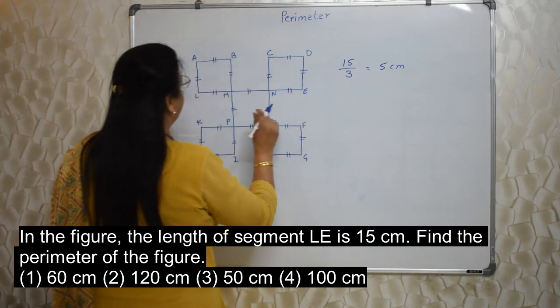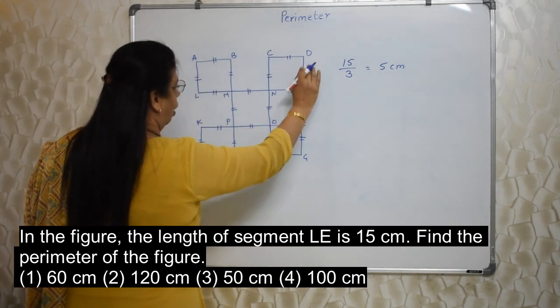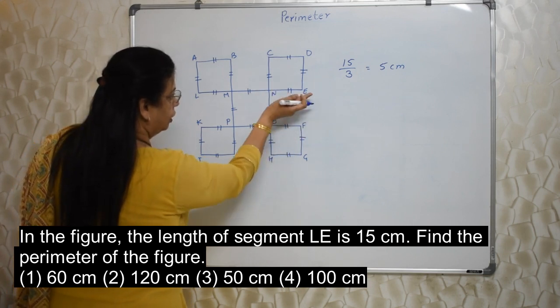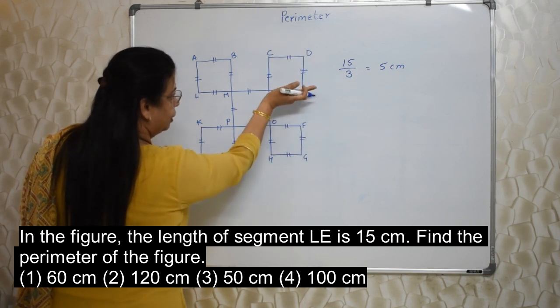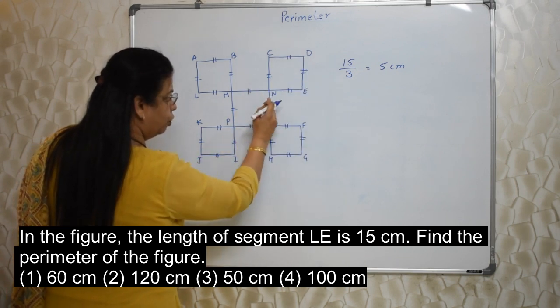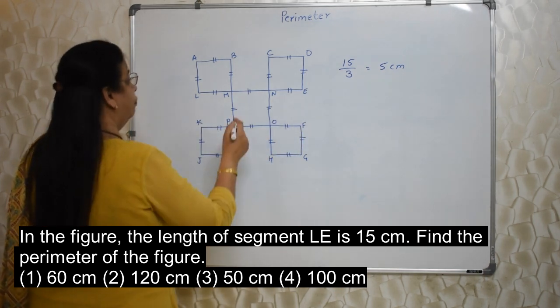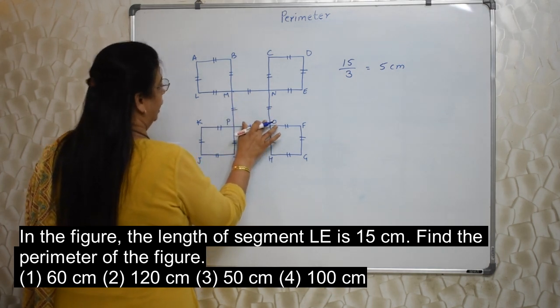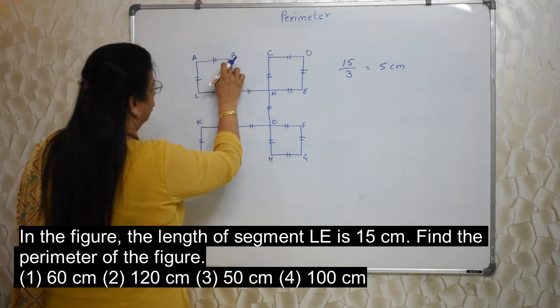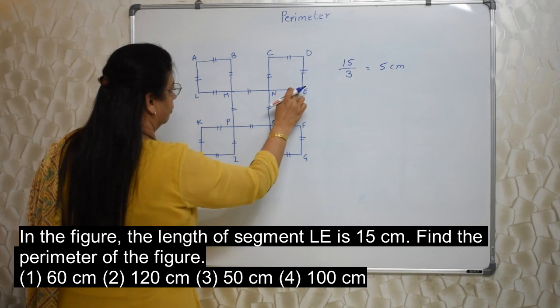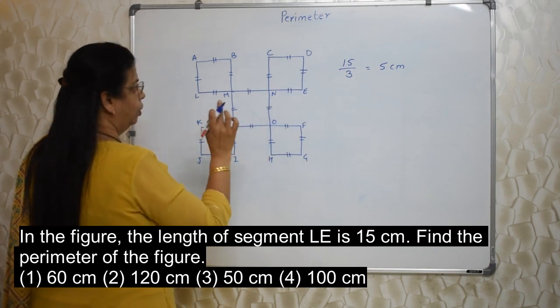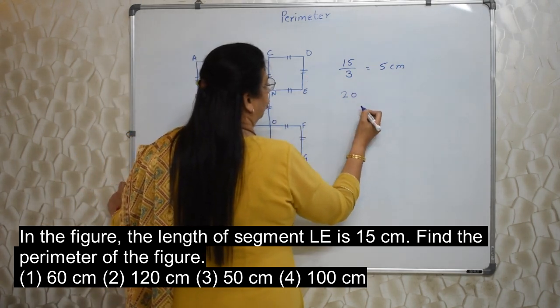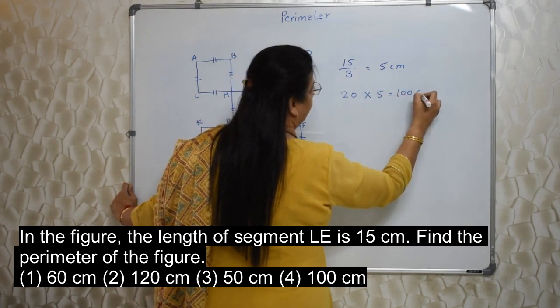So, there are 20. And in case of perimeter, we need to find out the outer border. But here, outer border means this is also outer part. Because this figure is not like this. It is here like this. So, this is also outer part only. So, we have to consider all the... If there would have been line like this, then we would not have taken. Right. But there is no line inside like this. The entire part, if you start your pencil like this, the outer portion you will get. So, 20 into 5.